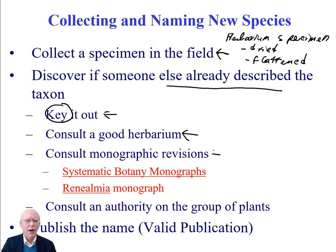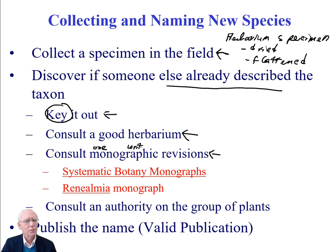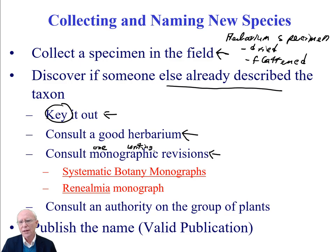You might also consult monographic revisions of what you think the new genus is. Assuming it's a new species, not a new genus, you could look at people who have written up descriptions of that genus. Those descriptions are written in what are called monographs. 'Mono' means one, 'graphis' means writing. A monograph is essentially a book published that codifies all the knowledge about a given taxon — perhaps a given genus — and makes it accessible to other botanists.